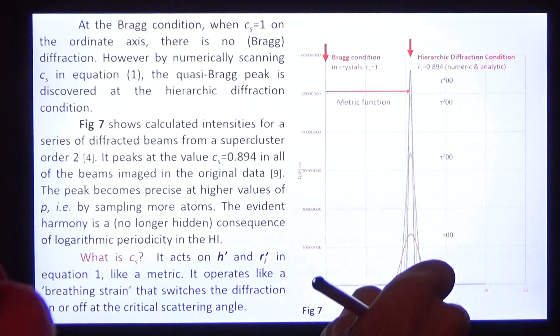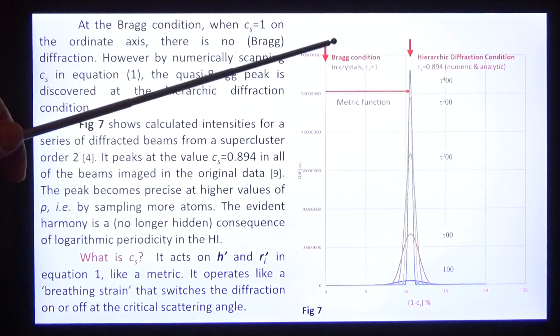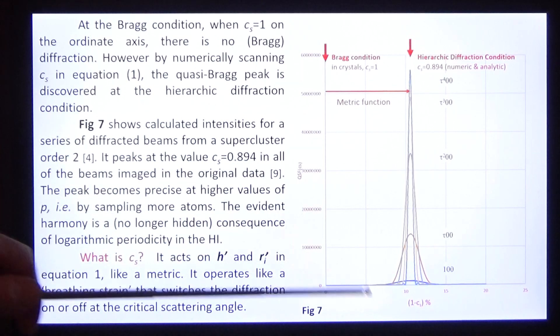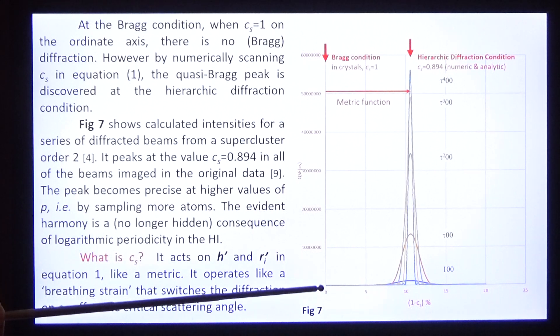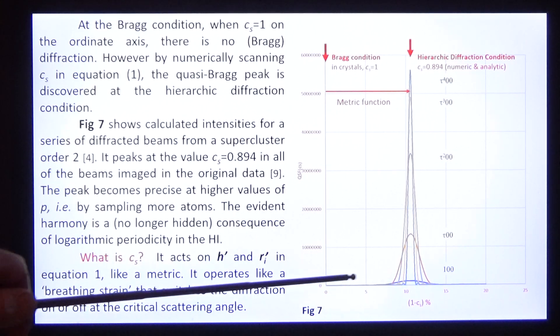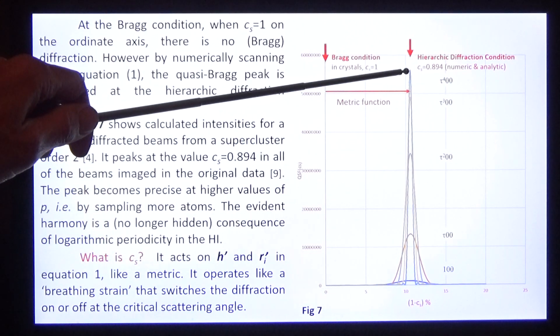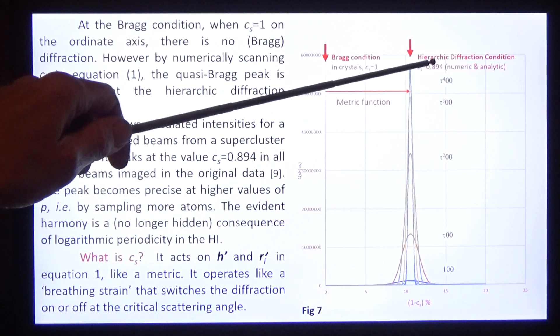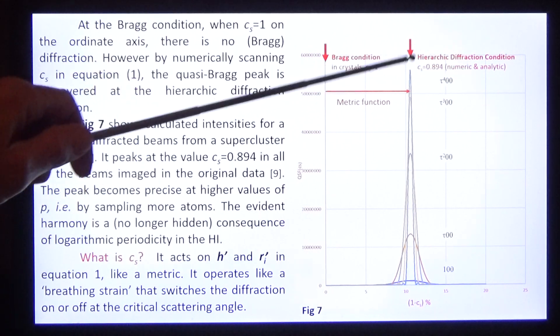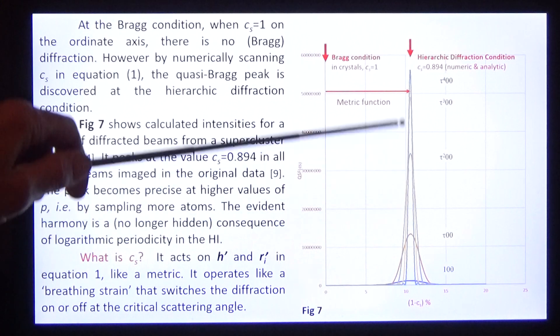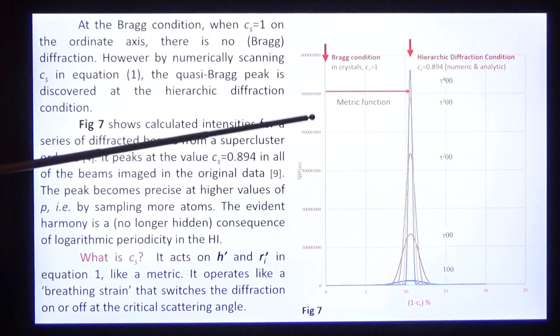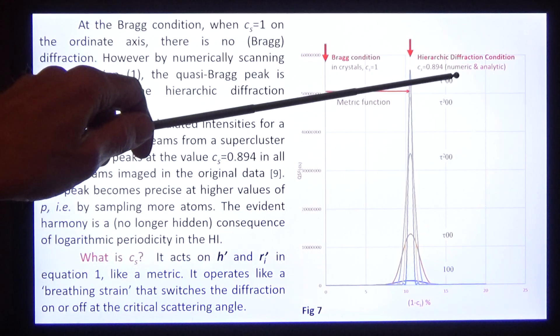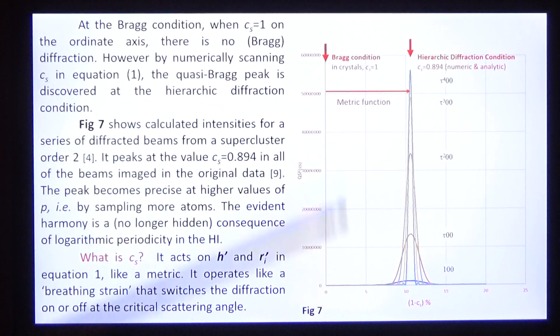How does it work out? There is no Bragg diffraction. The Bragg condition is on the origin where Cs equals 1, and look, all Bragg diffraction is 0. But when you scan Cs numerically, you find a quasi-Bragg condition for these four beams. The hierarchic diffraction condition is the same for all beams in Shechtman's data, and the divergence from the Bragg condition is this factor 0.894, which we call the metric.